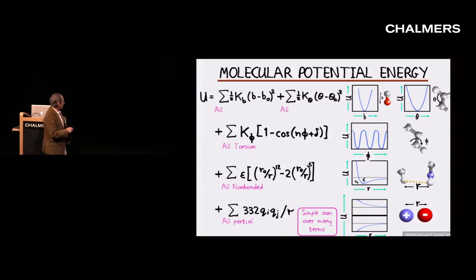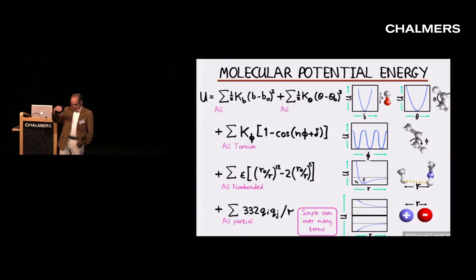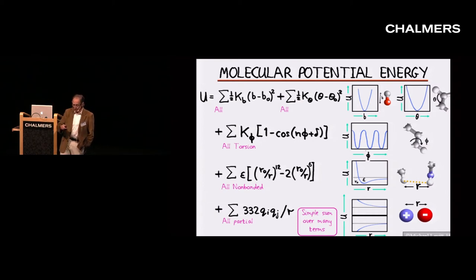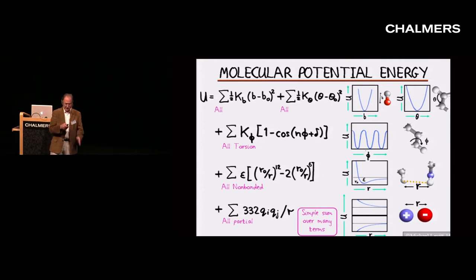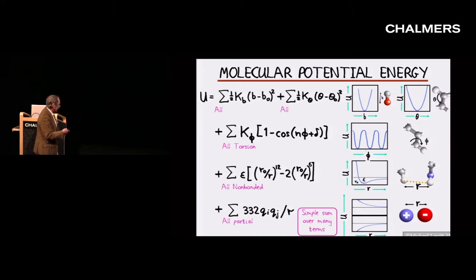In this equation, there are certain things like B, theta, phi, and R that depend on the structure, and there are other things that parametrize the force field. For example, if you want to stretch a bond, there's a parameter that tells you what the equilibrium length of the bond is, and another parameter that tells you how stiff the bond is.